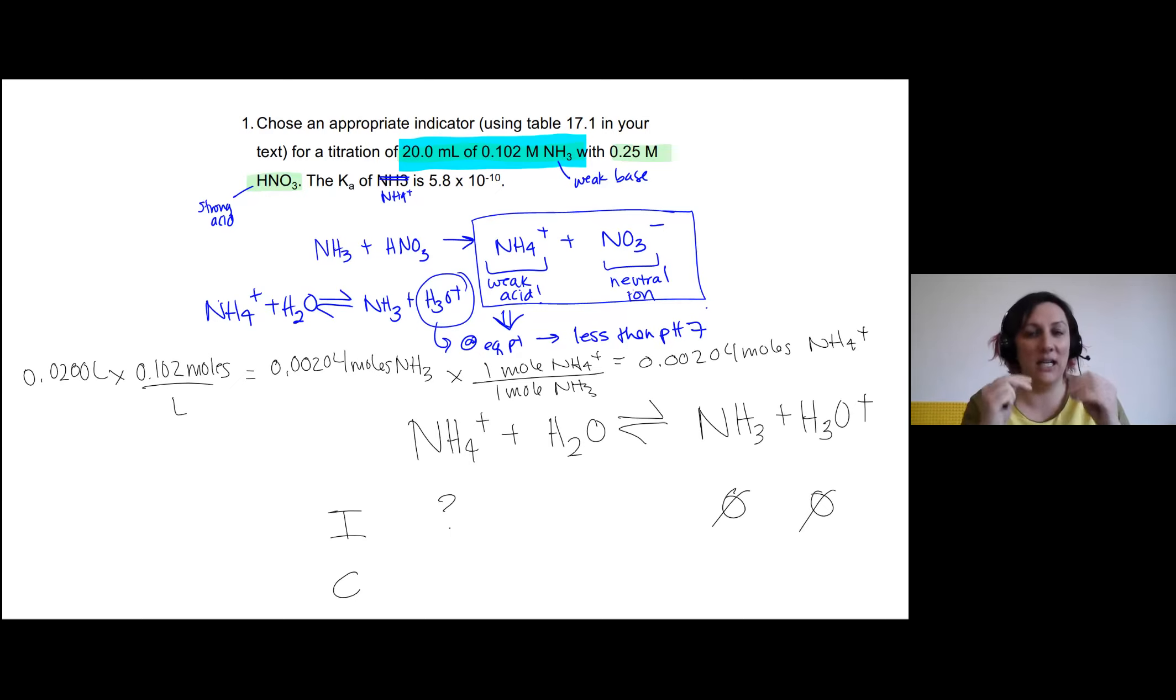Okay. So we know the moles, but we need the concentration for an ICE table. So we need to know the total volume at the equivalence point. So we need to know how much of our acid we actually added.